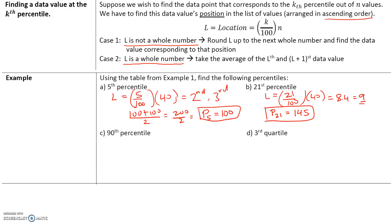Try parts C and D on your own: find the 90th percentile, and for the third quartile, remember the third quartile is equivalent to the 75th percentile, which means your k value would be 75. Work on those on your own and we will go over this in class.